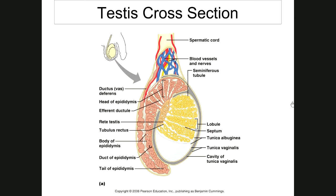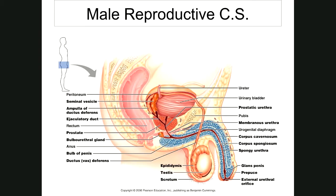The tube that leaves the epididymis is the ductus deferens, also called the vas deferens — both names meaning a tubule which leads away. A vasectomy is where this duct is cut, a small portion removed, and both ends are tied off. This is a form of male sterilization.